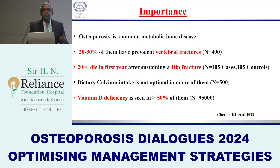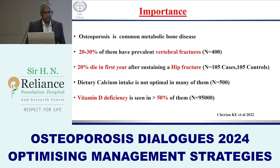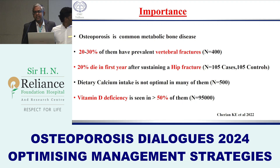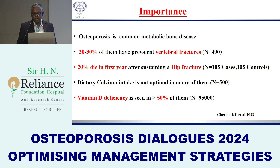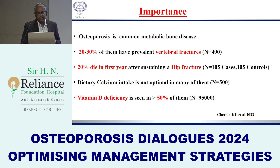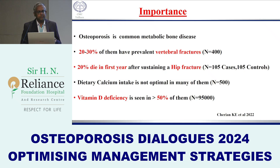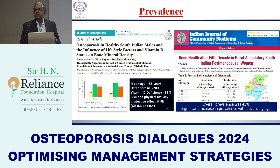Twenty percent of menopausal women have fractures, many of them are asymptomatic. An important factor: of five women who sustain a fracture, one will die within one year, whatever treatment we provide — that is a 20% mortality. We also know that dietary calcium intake is not optimal, and vitamin D deficiency is common. About 40 to 50% of Indian postmenopausal women have osteoporosis based on various studies across India.